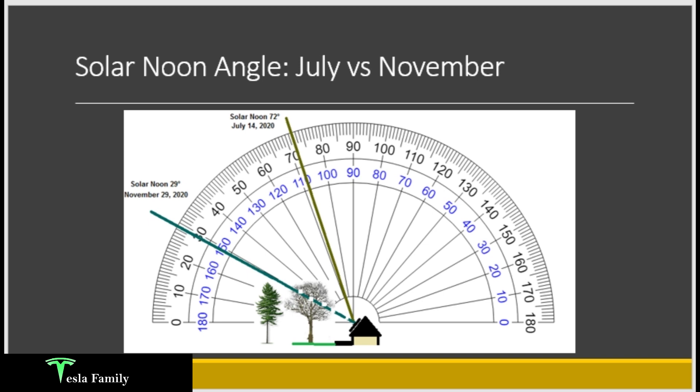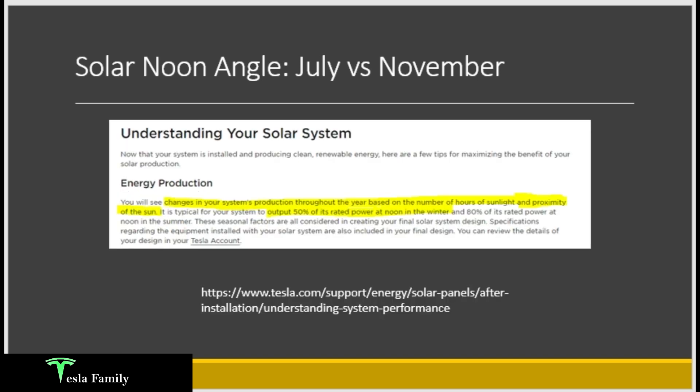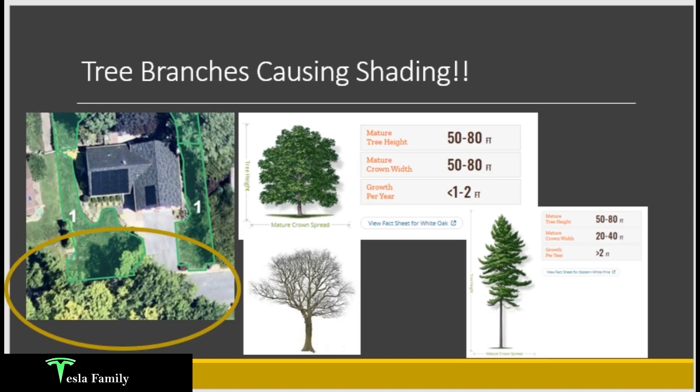I got a snip from the Tesla website helping customers understand their solar system. It says highlighted that you will see changes in your system's production throughout the year based on the number of hours of sunlight and proximity of the sun. It is typical for your system to output 50% — only half of its rated power at noon in the winter — and 80% of its rated power at noon in the summertime. So what's causing the shading in my November production curve?